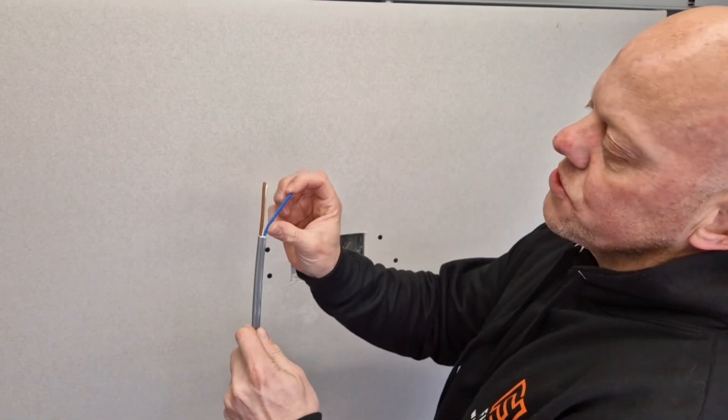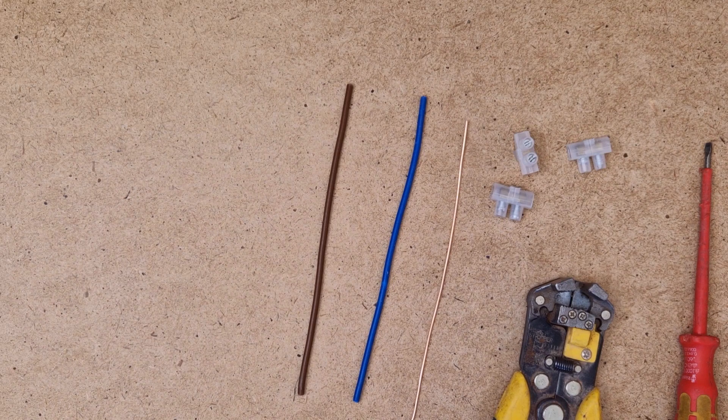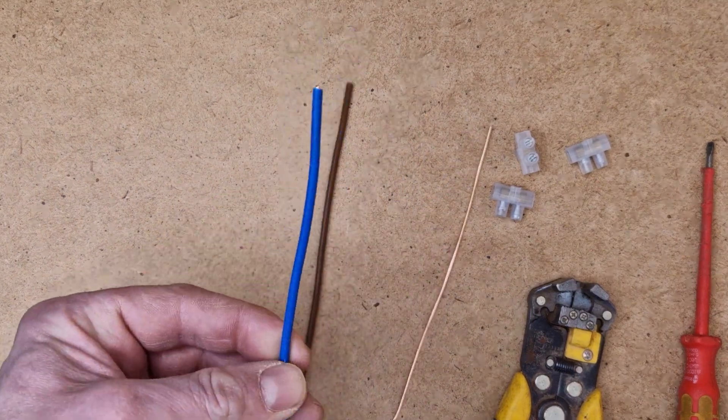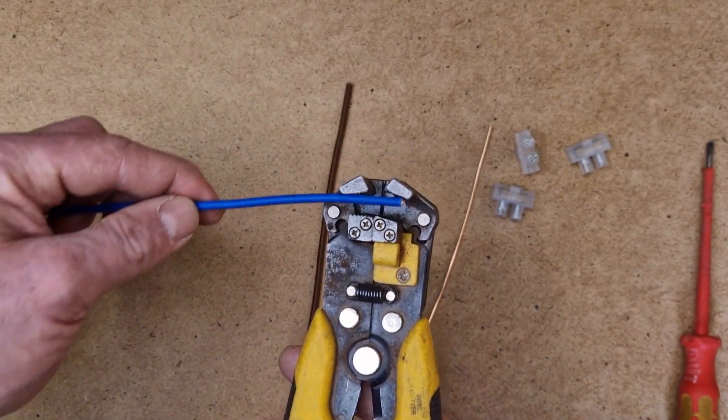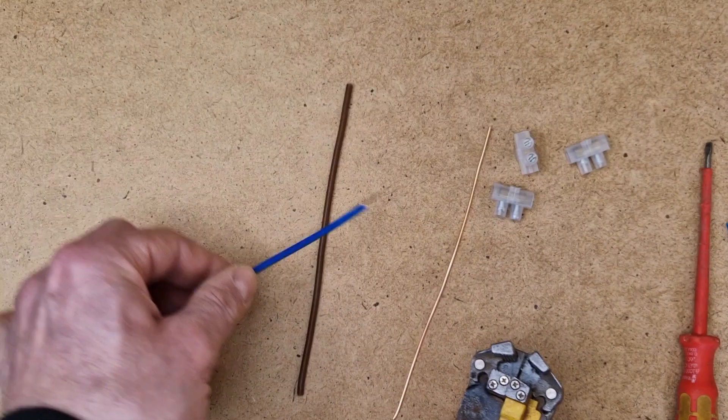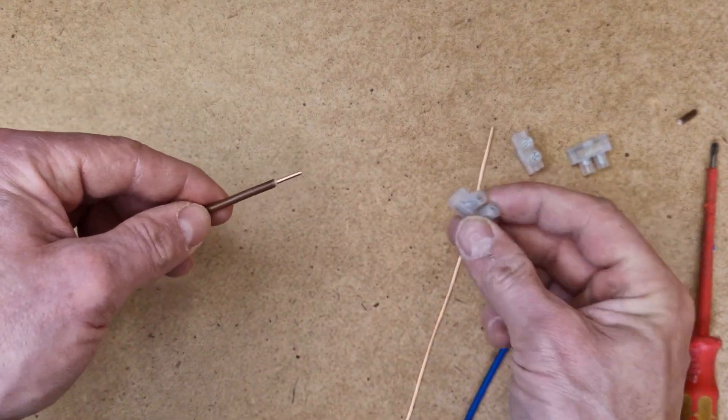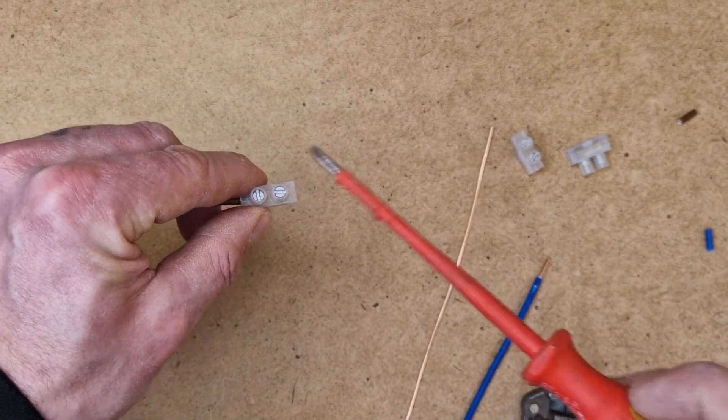So for this first method we're going to use these connector blocks. We've got the offcuts of cable here. If you get your strippers, put them in, take a bit off each end, and that will allow you then to put that into the connector block. Make sure that there's no copper showing, tighten that up and give it a pull. Do that to each of these conductors.